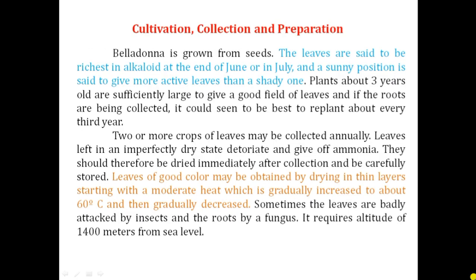Next is cultivation, collection and preparation. Belladonna is cultivated from seeds using the broadcasting method. The month selected is at the end of June or July. A sunny position provides more yield compared to shaded conditions. Generally, plants about three years old are sufficiently large to produce good quality yield, so plants are often selected after three years of growth.